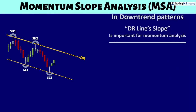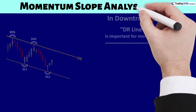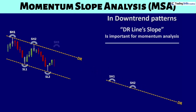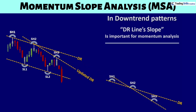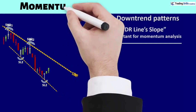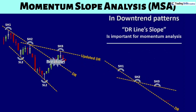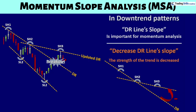In the momentum slope analysis of an established downtrend, compare the slope of the last two dynamic resistance lines. No change in slope means the strength of the trend is constant. A decrease in the slope means the strength of the trend is increasing. A decrease in the slope means the strength of the trend is decreasing.